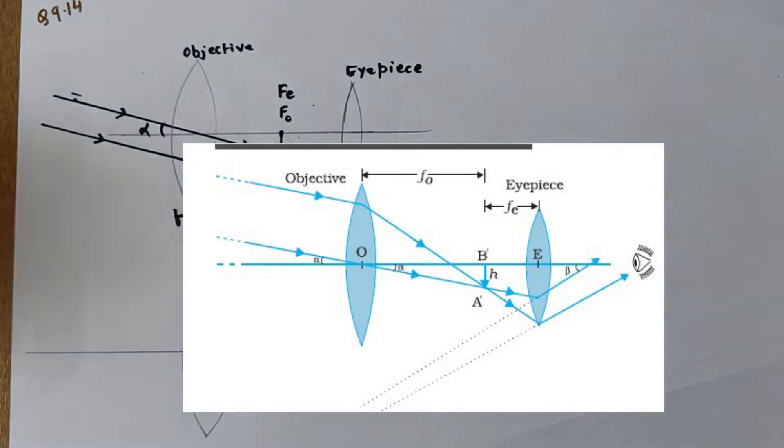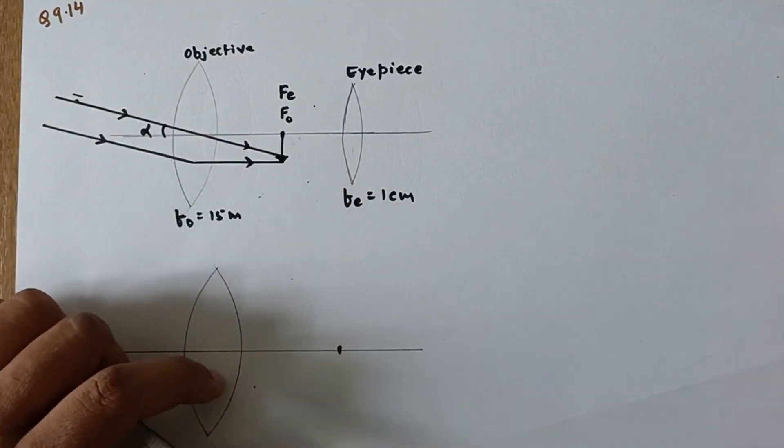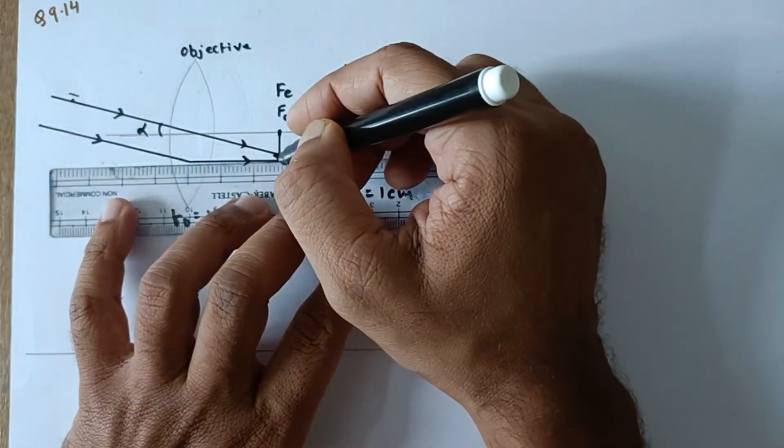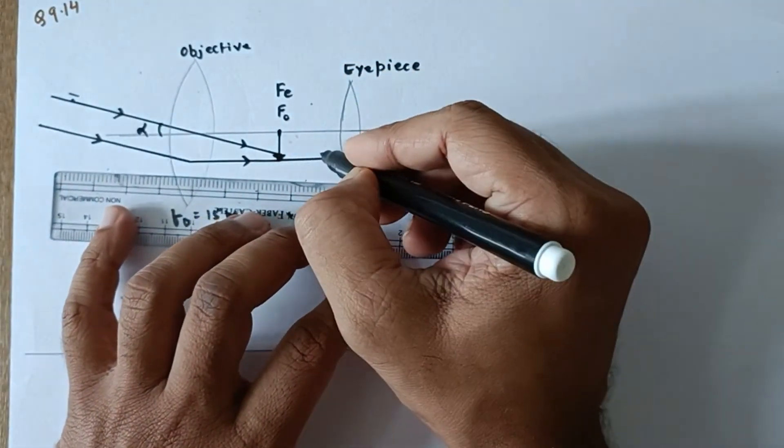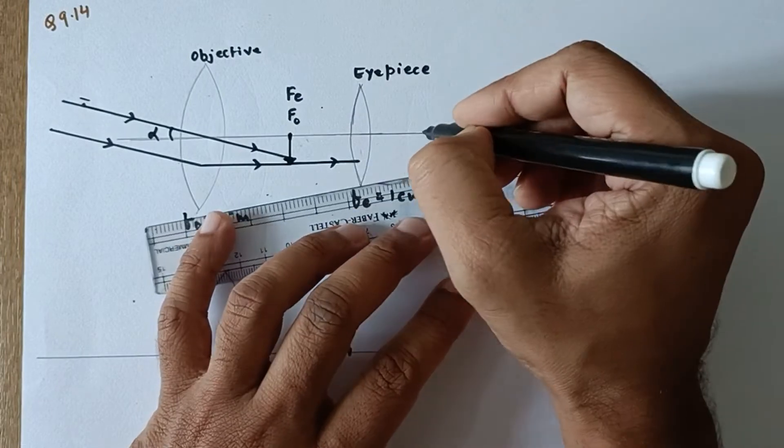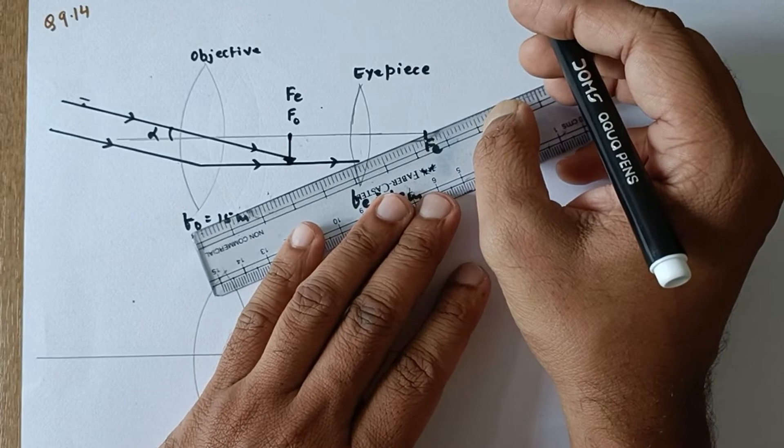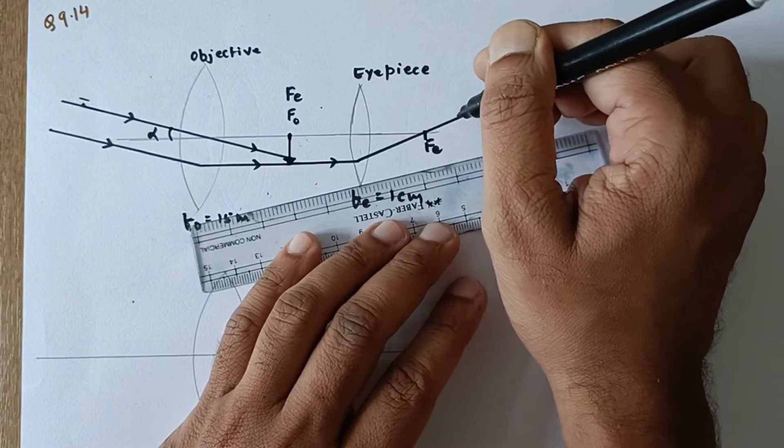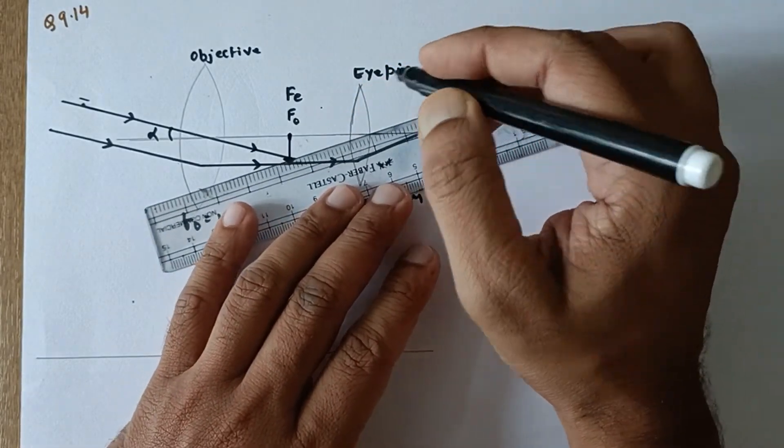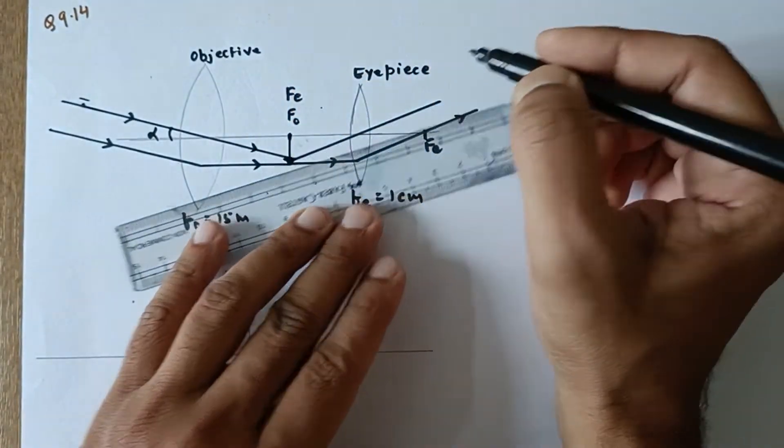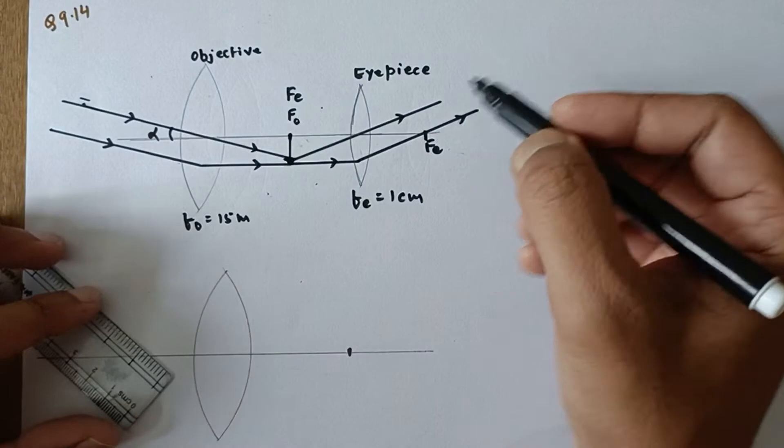In that particular case, the image would behave as the object and then the rays, this is the focus of the eyepiece, it will go like this one. And then another ray will be like this passing through the optical center.